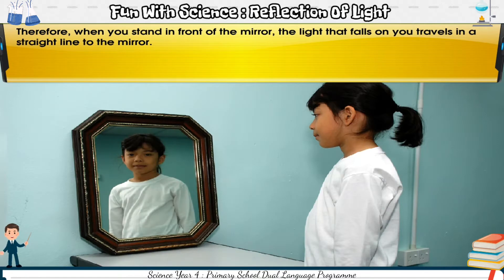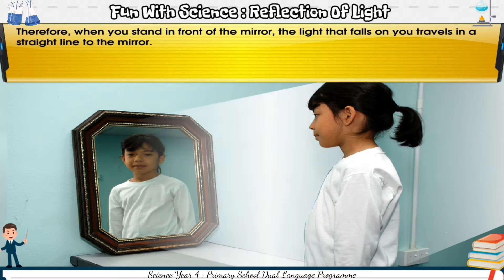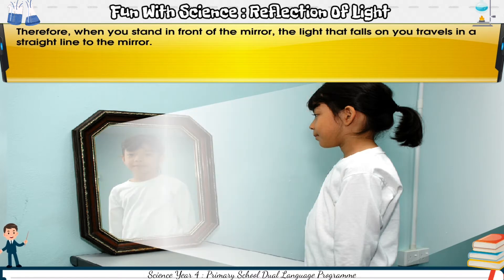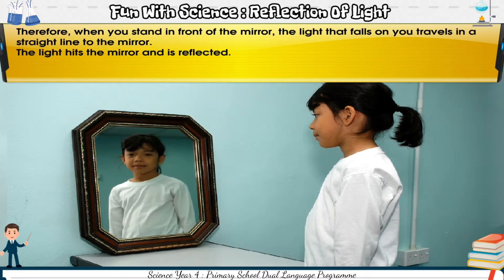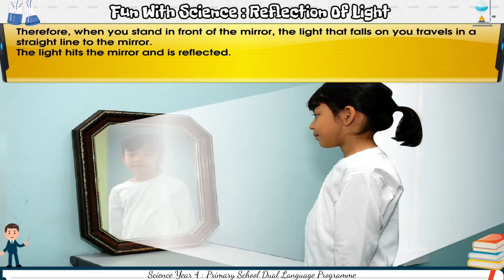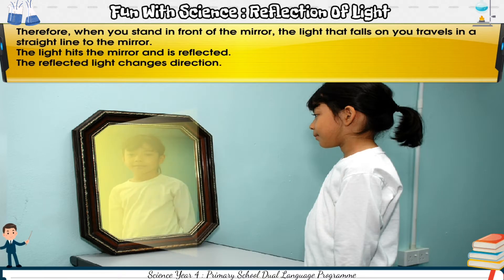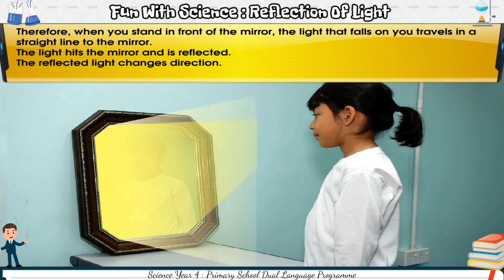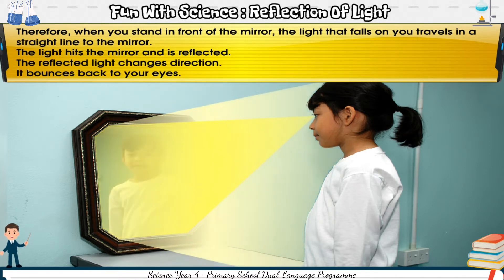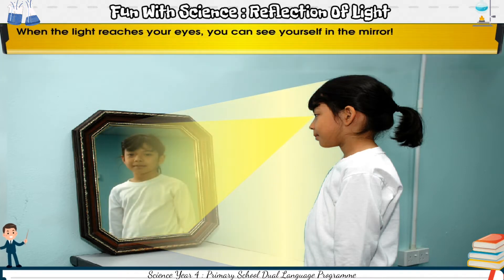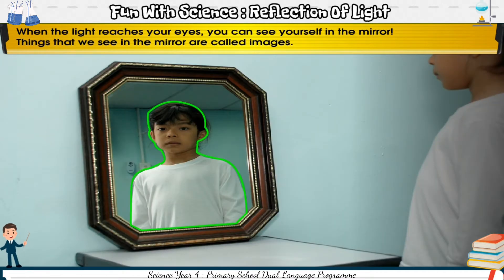Therefore, when you stand in front of the mirror, the light that falls on you travels in a straight line to the mirror. The light hits the mirror and is reflected. The reflected light changes direction. It bounces back to your eyes. When the light reaches your eyes, you can see yourself in the mirror. Things that we see in the mirror are called images.